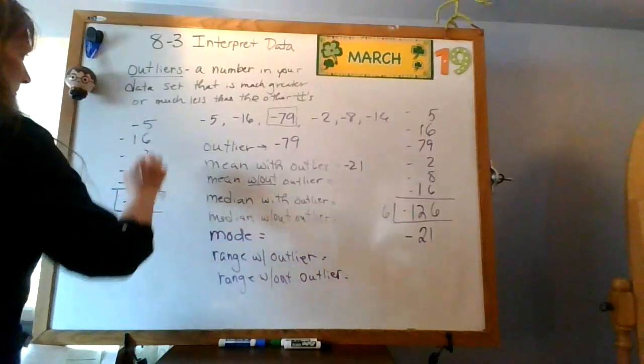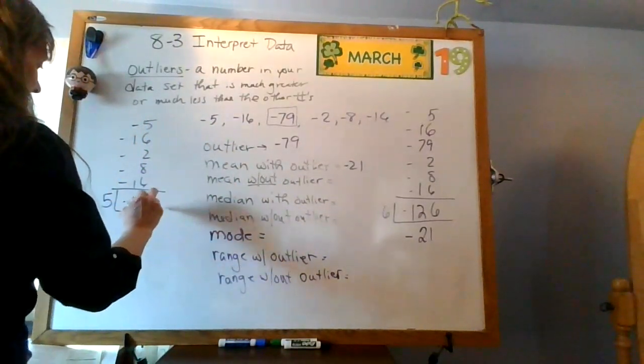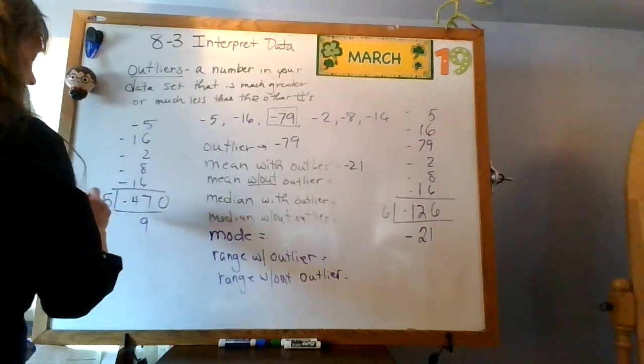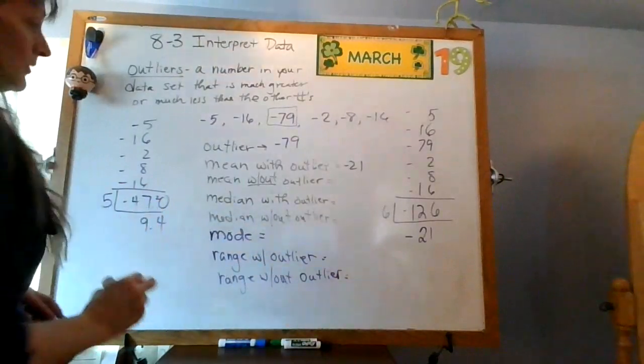I'm going to divide that by this time. I have 1, 2, 3, 4, 5. So I'll put 5 in there. That goes 9 times. 5 times 9 is 45. So I'd have 2 left over. So that'd be 9.4.